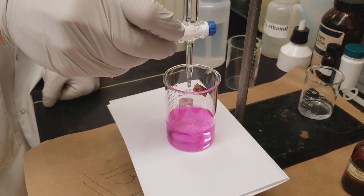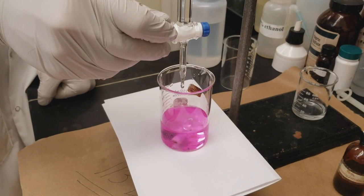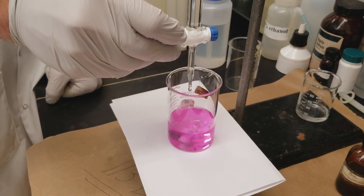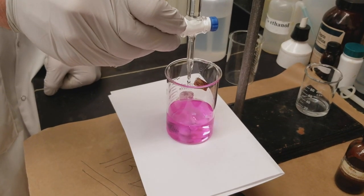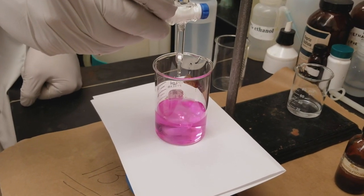So what we're looking for is a color change. We're going to see it go from being a very faint pink. The pink is going to start to lighten, become a very faint pink, and we want it to just become colorless. So the white piece of paper is going to help us tell exactly when that happens.